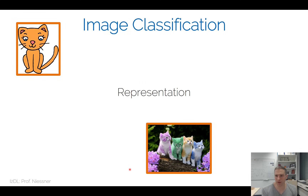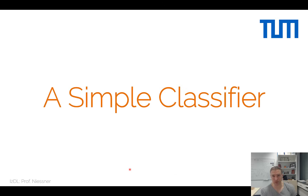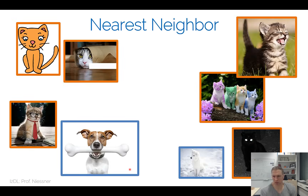We're going to use neural networks for that, but unfortunately there are a few things we have to learn first before we start with complicated feature learning. Instead, we'd like to start very simple. The simplest possible algorithm we could deal with is a very simple classifier. We could do simply nearest neighbor lookups. Let's assume we have a bunch of images and for these images we have labels — we know their respective classes.